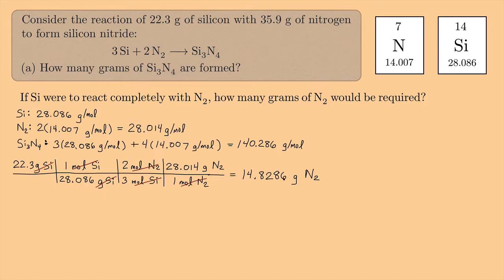14.8286 grams of nitrogen — that's how much nitrogen I need to react completely with the silicon. I have 35.9 grams of nitrogen, so I have more than enough nitrogen. Nitrogen is not the limiting reactant. In this case, silicon must be the limiting reactant — Si is limiting.